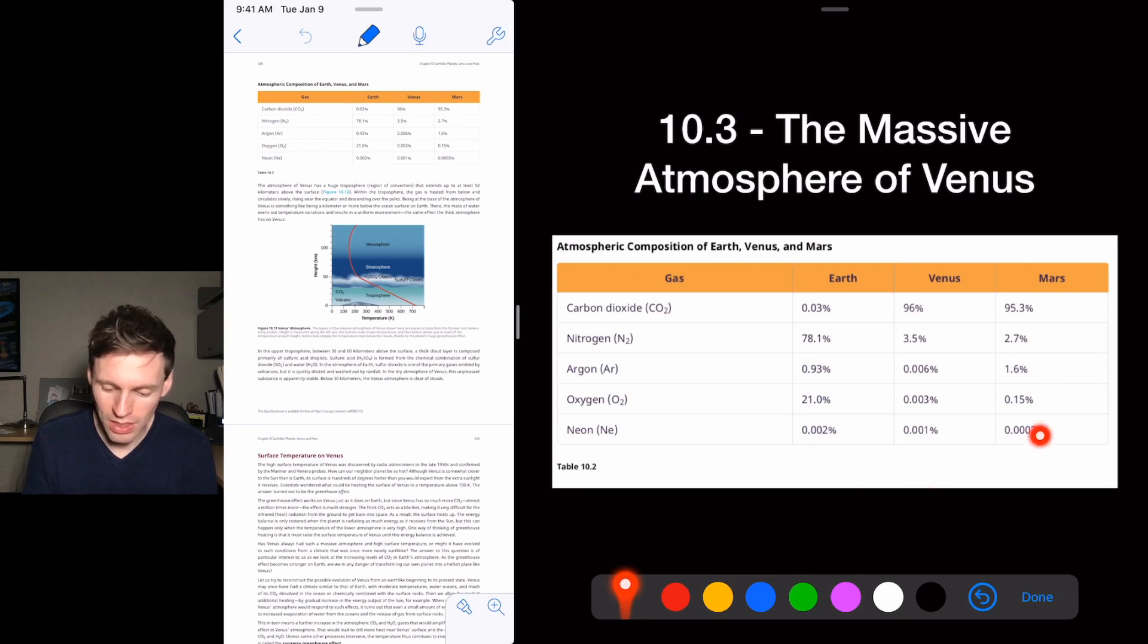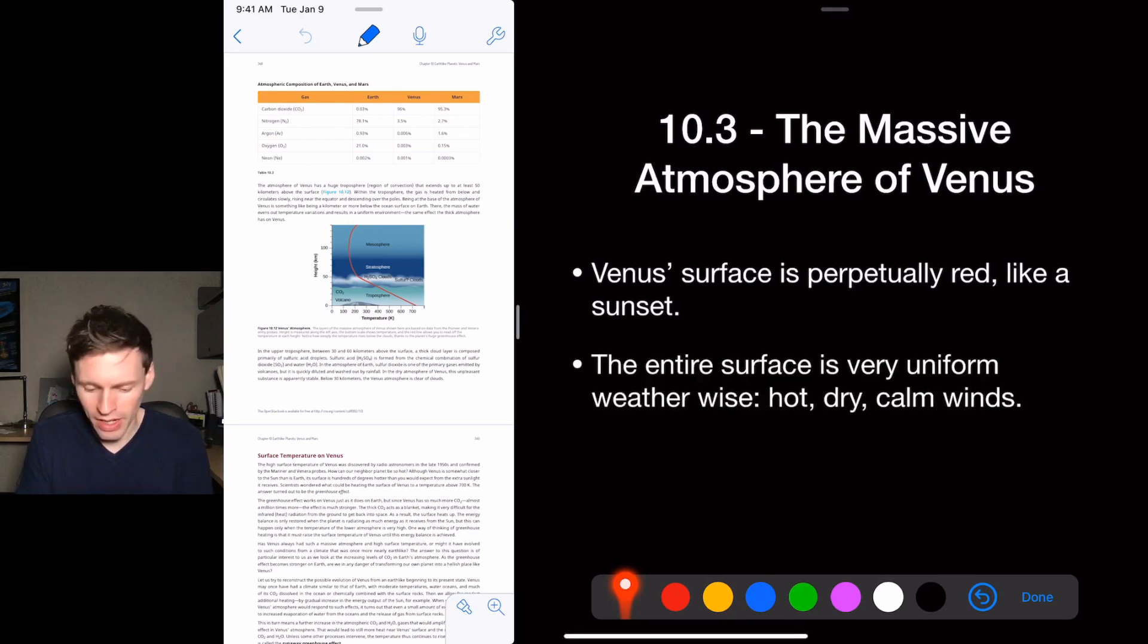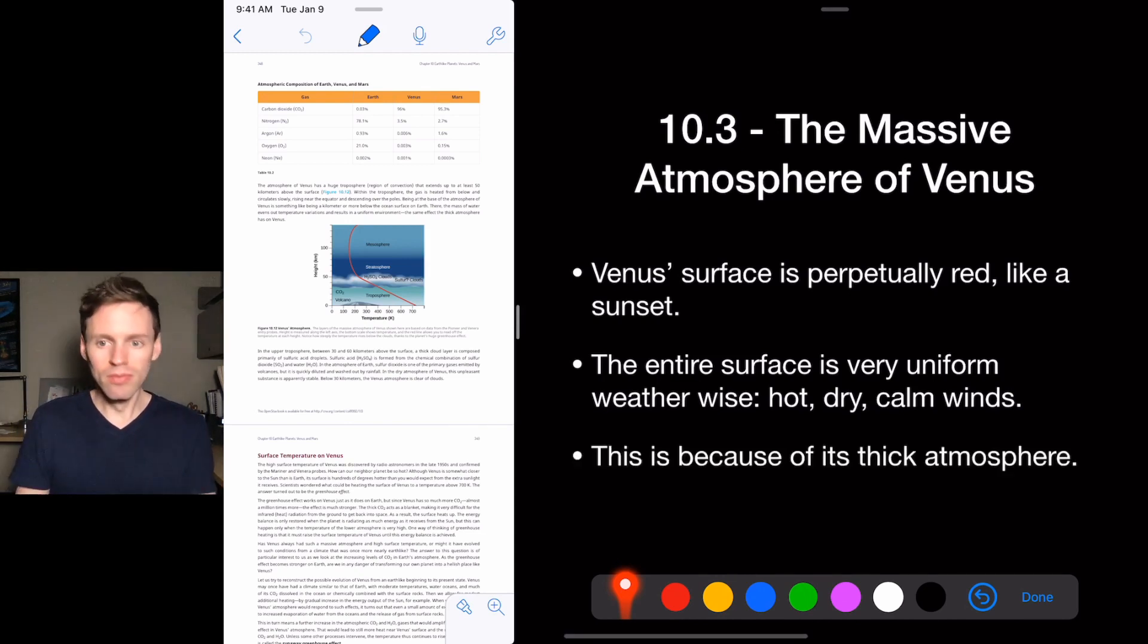Earth has a tiny amount of carbon dioxide now because we've buried it underground. Life has eaten it, spit out oxygen and so on. So this is crazy. It's a very thick carbon dioxide atmosphere. Venus's surface is perpetually tinted like sepia tone, like a sunset all the time. And that's because it's got such a thick atmosphere. It's very hot and dry and calm on the surface everywhere. The weather's the same everywhere. It's San Diego on steroids, but cloudy. So not a great example.